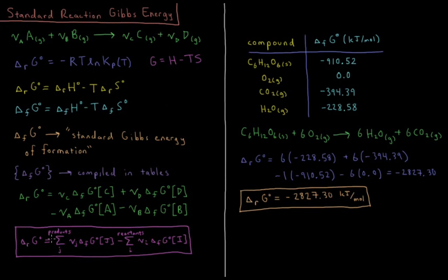So to summarize that in a little bit more of an elegant mathematical form, we have the standard Gibbs energy of reaction equals the sum over all the products, stoichiometric coefficient times standard Gibbs energy of formation of the products, minus sum over all the reactants, stoichiometric coefficient of the reactants times the standard Gibbs energy of formation of each reactant.